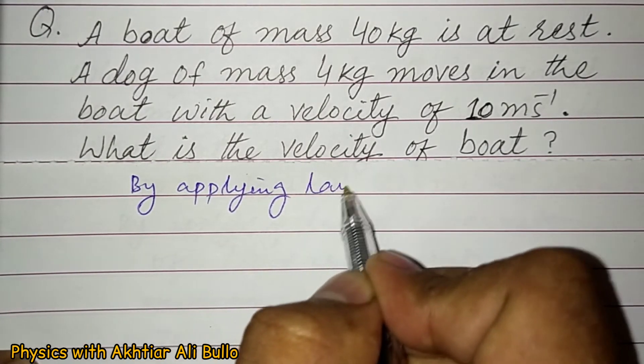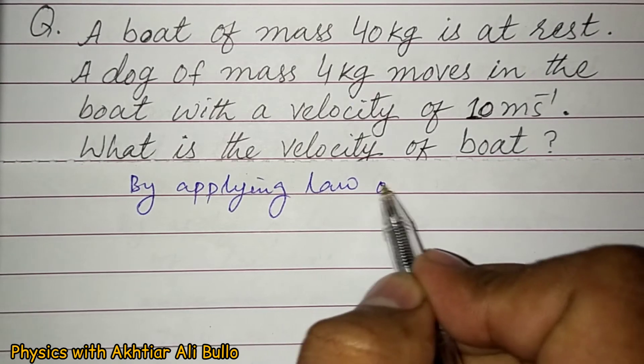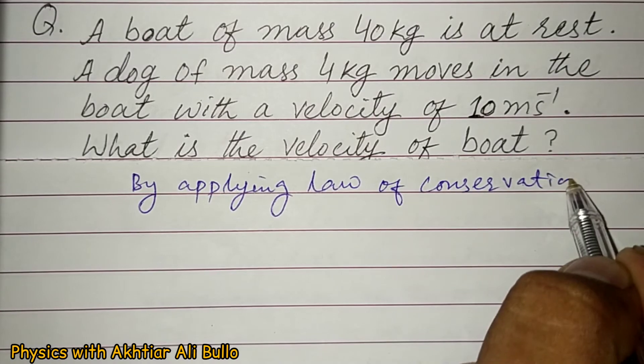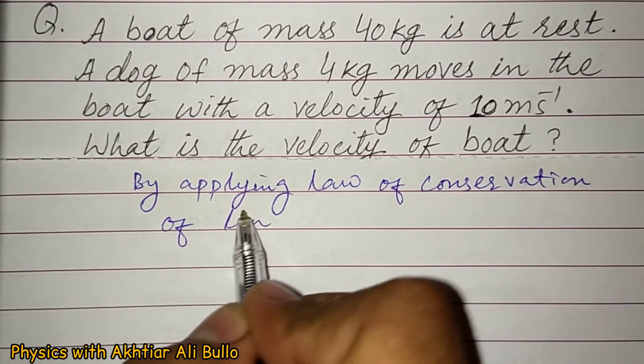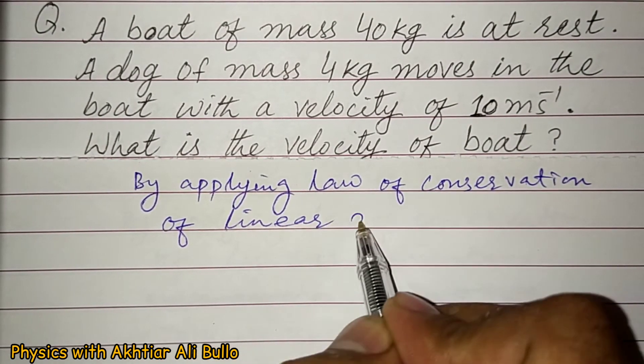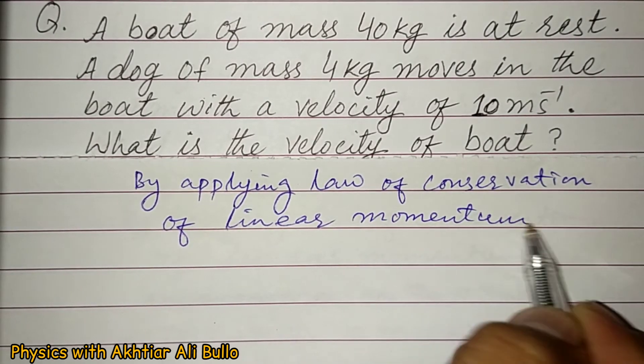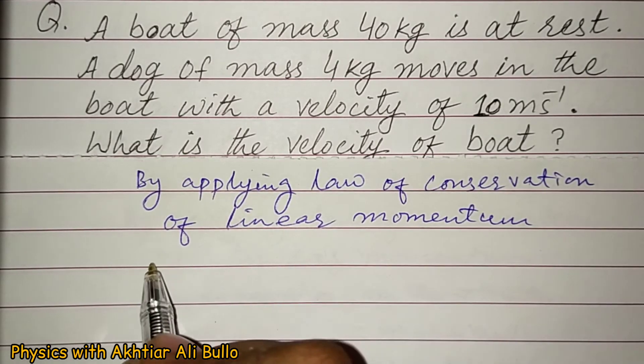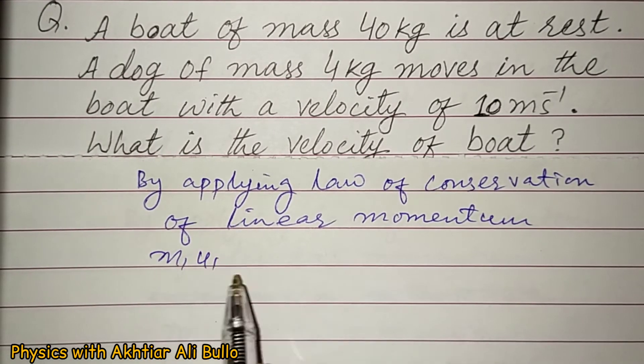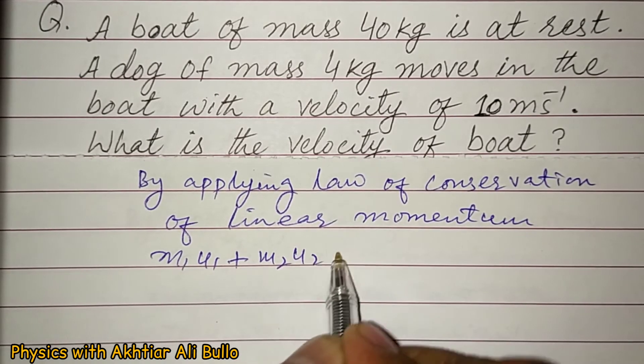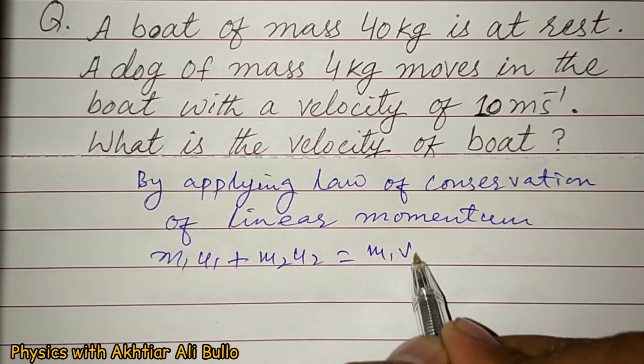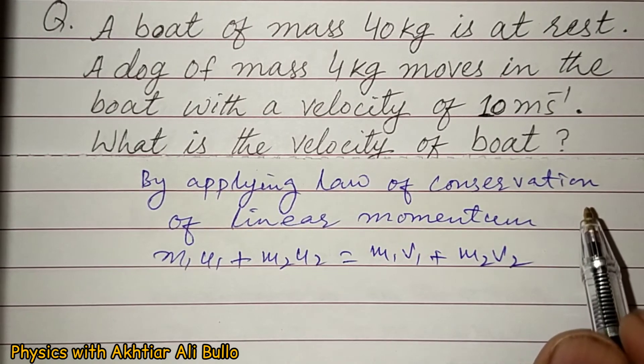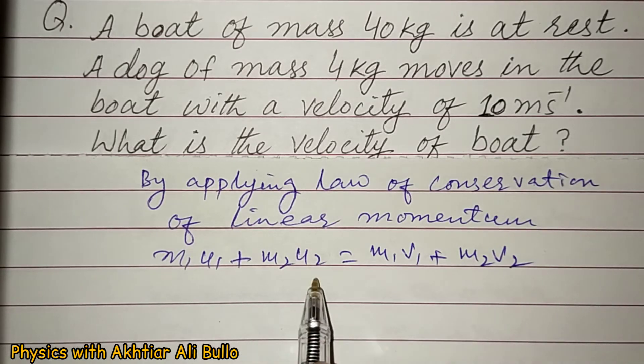By applying law of conservation of linear momentum, momentum before collision is equal to momentum after collision. This means m1·u1 plus m2·u2 is equal to m1·v1 plus m2·v2. As initially both are at rest, u1 and u2 will be 0.